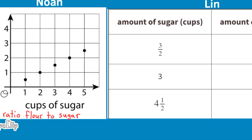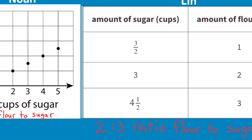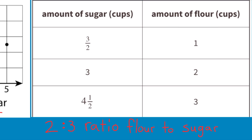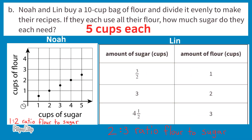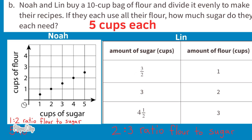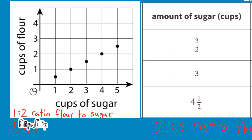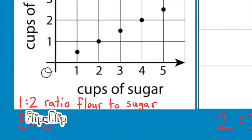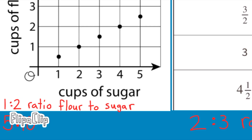For Noah: 1 cup of flour × 5 = 5 cups of flour, and 2 cups of sugar × 5 = 10 cups of sugar. Noah will use 10 cups of sugar for every 5 cups of flour.